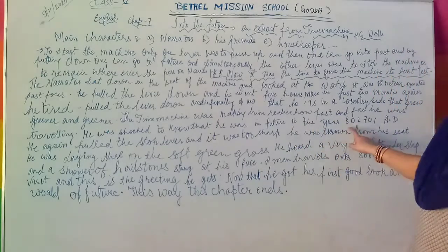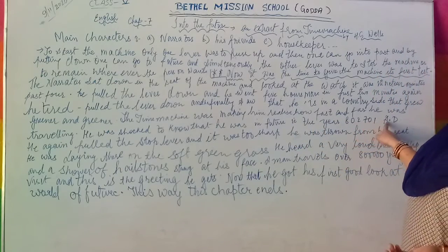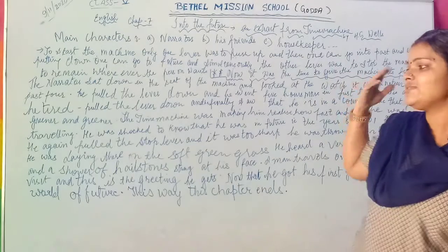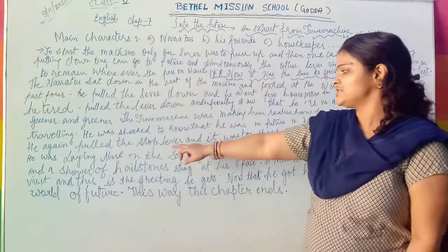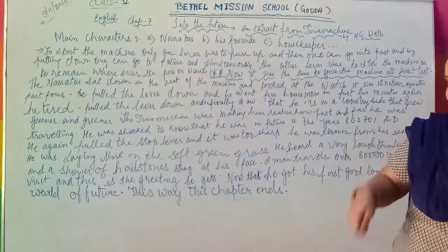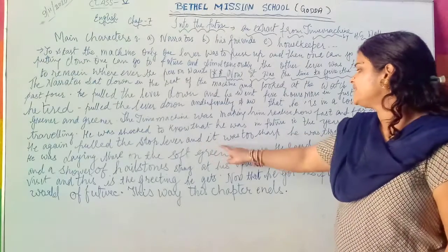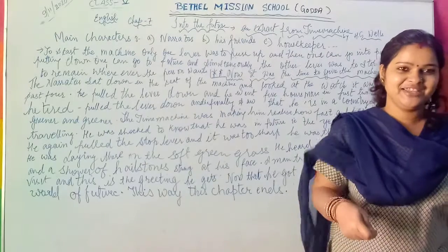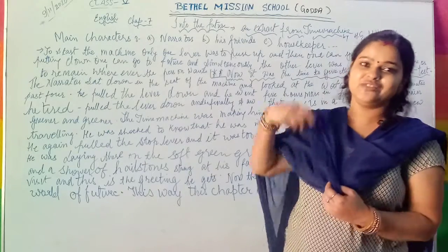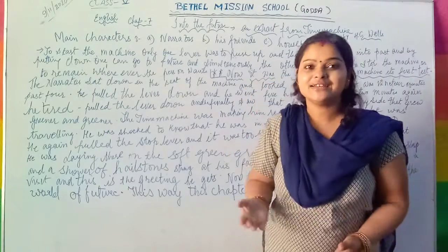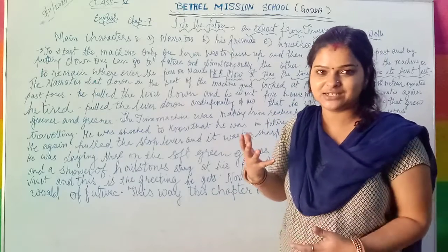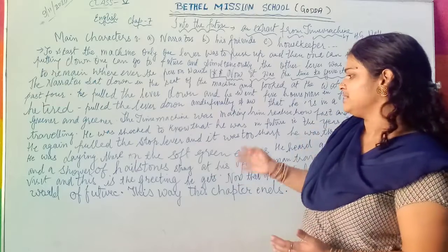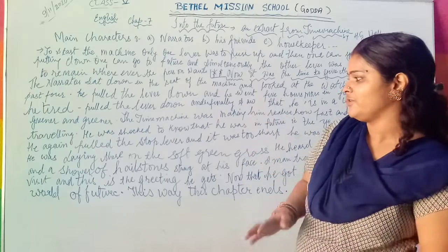The year was 802,701 AD. He again pulled the stop lever, but it was too sharp. He was thrown from his seat when he pressed the lever harder — the narrator was thrown from the seat of the machine.